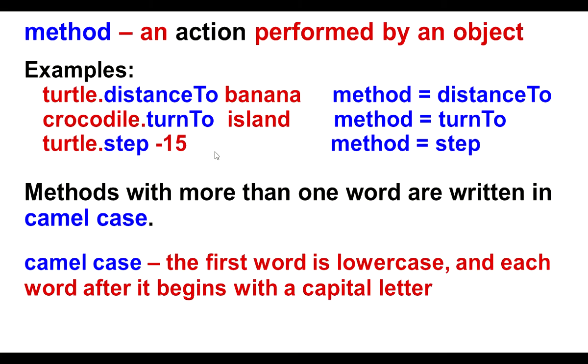The method is the action that the object performs. So it's telling you like a sentence. The object performs this method. So the methods are written in blue: distance to, turn to, and step.